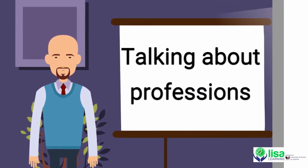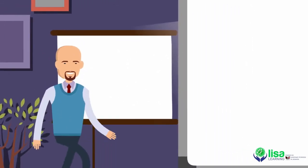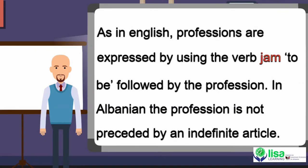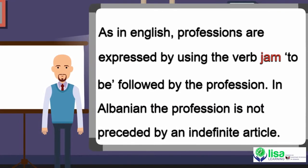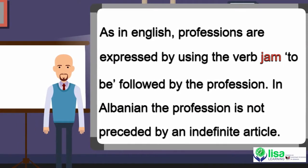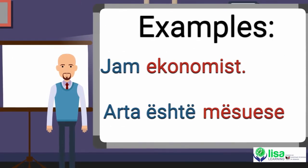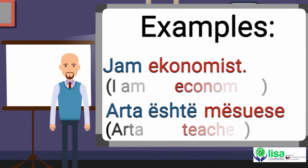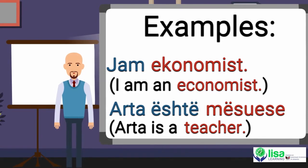Talking about professions: as in English, professions are expressed by using the verb jam (to be), followed by the profession. In Albanian, the profession is not preceded by an indefinite article. Examples: Unë jam ekonomist (I am an economist); Arta është mësuese (Arta is a teacher).